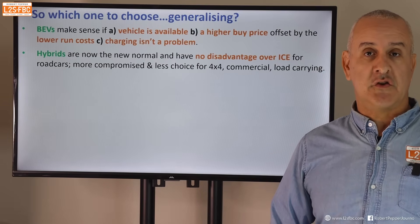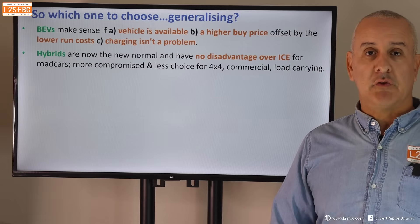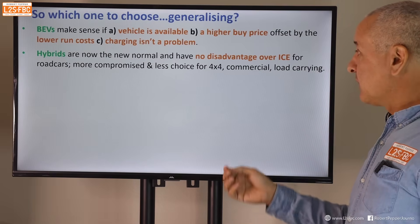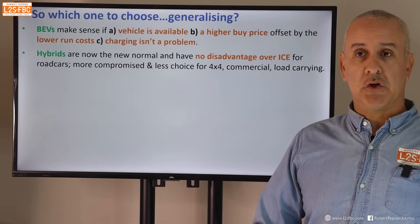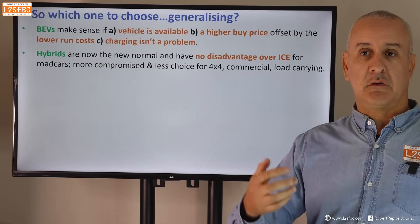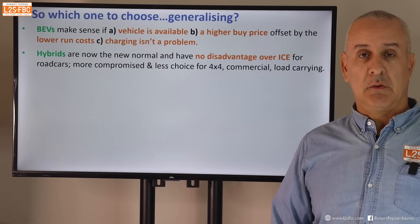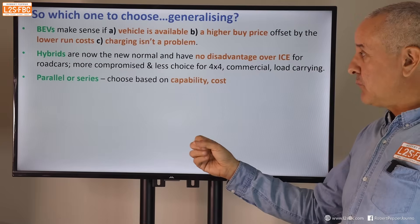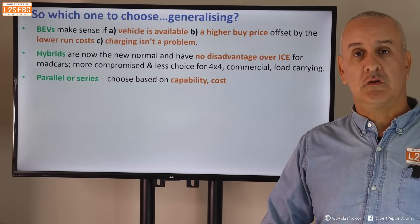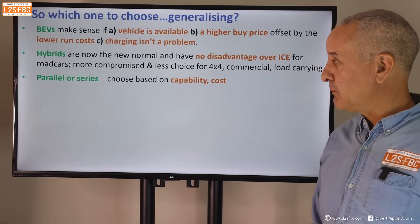Hybrids are the new normal for road cars and city SUVs — there's really no disadvantage to having one. That's why Toyota has discontinued all non-hybrid versions of the Camry, RAV4, and Corolla. The only non-hybrid Toyotas remaining are the four-wheel drive and sports car ranges. For four-wheel drives and commercials, hybrids are less common due to weight, cost, and packaging challenges. As for parallel versus series — don't worry about it; focus on what the vehicle does for you.